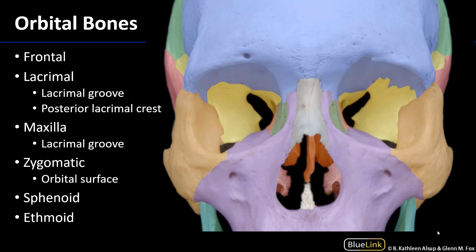I'd like to start with this color-coded skull so that we can best visualize how these bones relate to one another. The first bone I'd like to draw your attention to forms the front of the cranium — the frontal bone — and it is going to be largely the roof of the orbit. The overabundance of the roof of the orbit is formed by this bone.